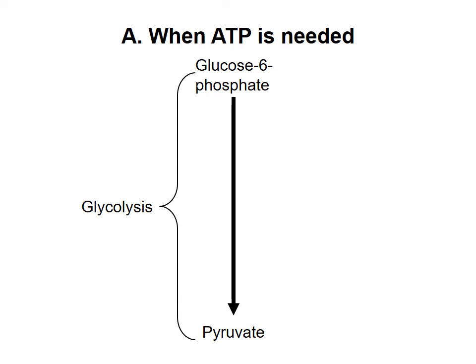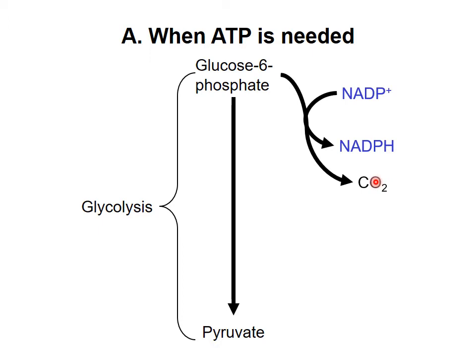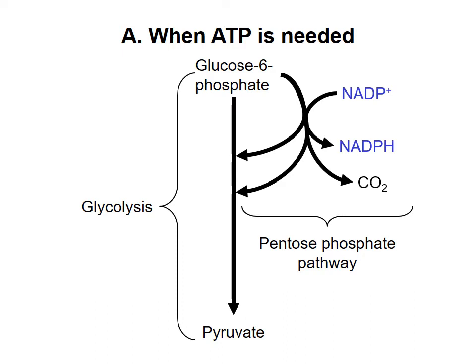Under conditions when the cell needs NADPH but also needs to continue to produce ATP, some glucose 6-phosphate is diverted from glycolysis so that carbon can be oxidized to carbon dioxide. Electrons are taken from carbon and put onto NADP+, to make NADPH. Most of the carbons are converted to intermediates in glycolysis so that they can re-enter glycolysis and be converted to pyruvate, a process that produces ATP. This is one version of the pentose phosphate pathway.